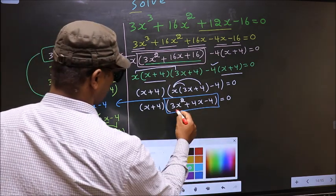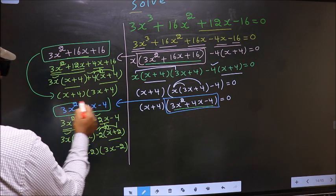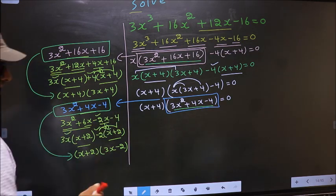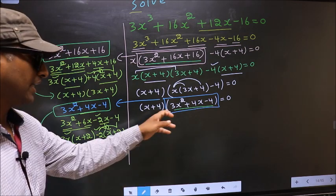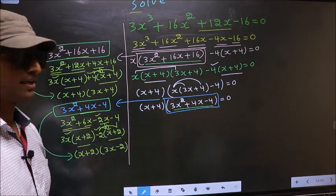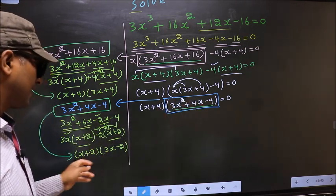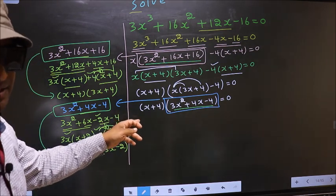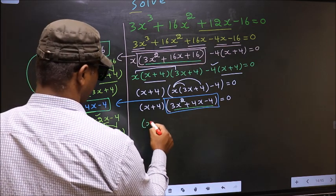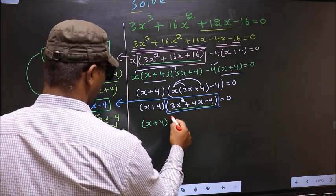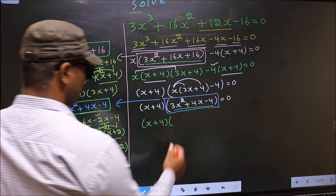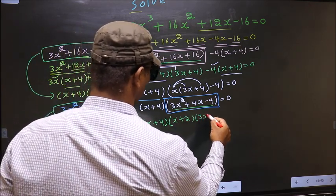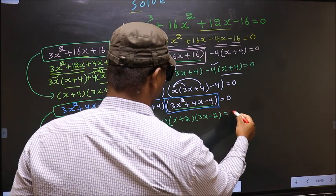In place of this quadratic we should write this. So this equation will change to: x plus 4, times x plus 2, times 3x minus 2, equal to 0.